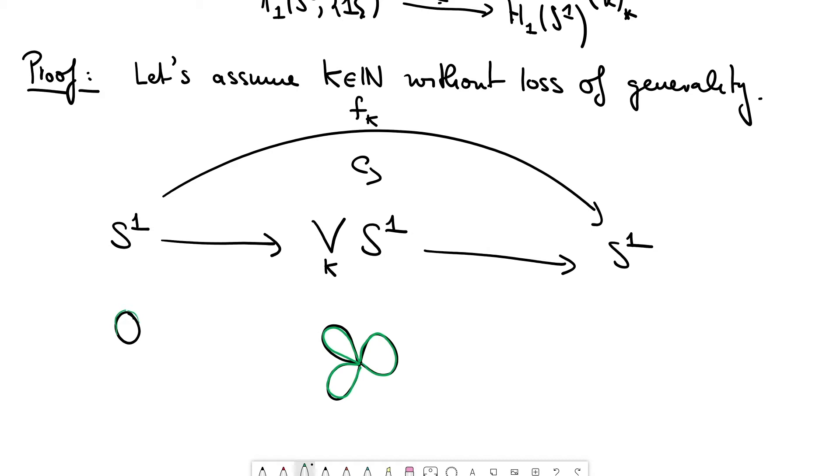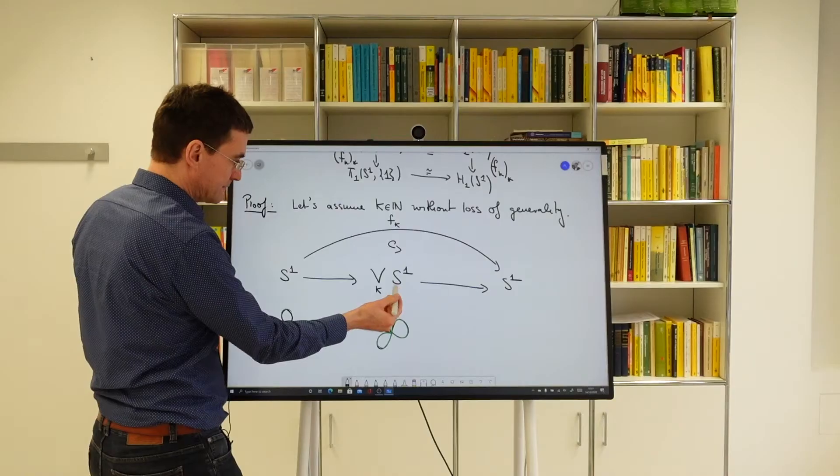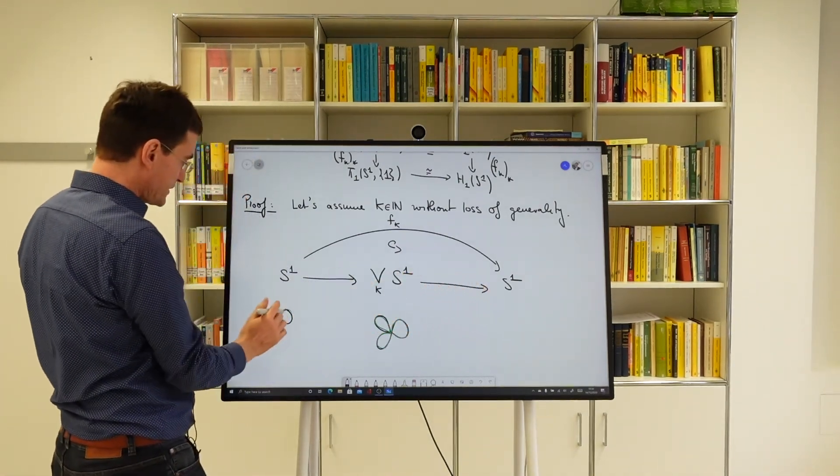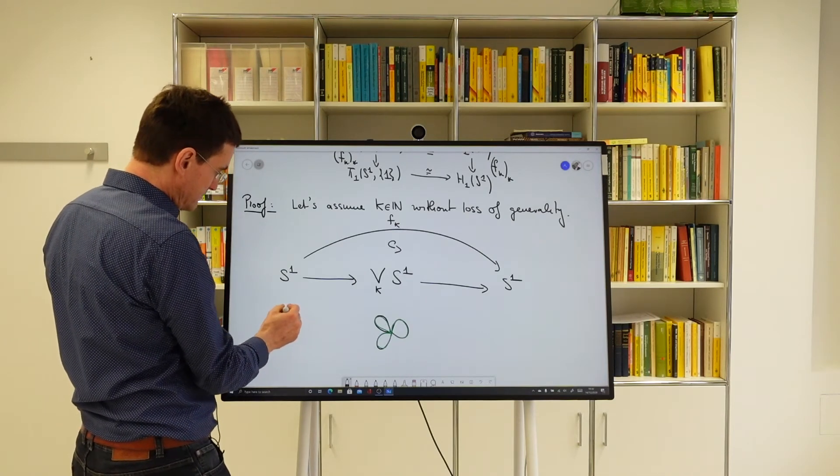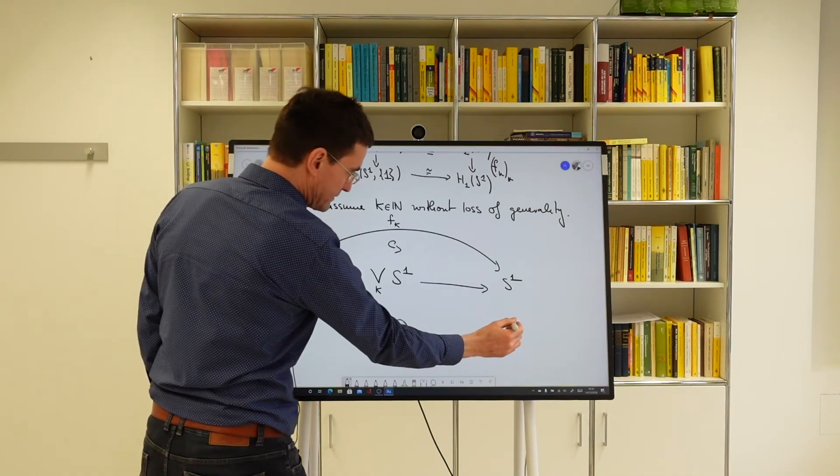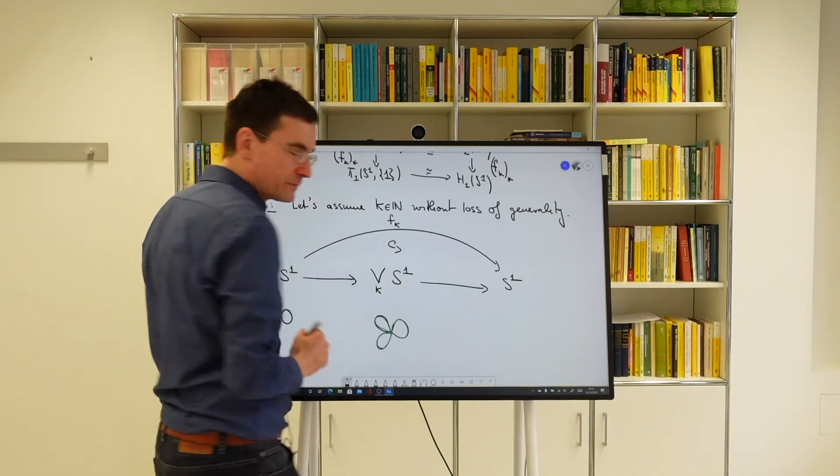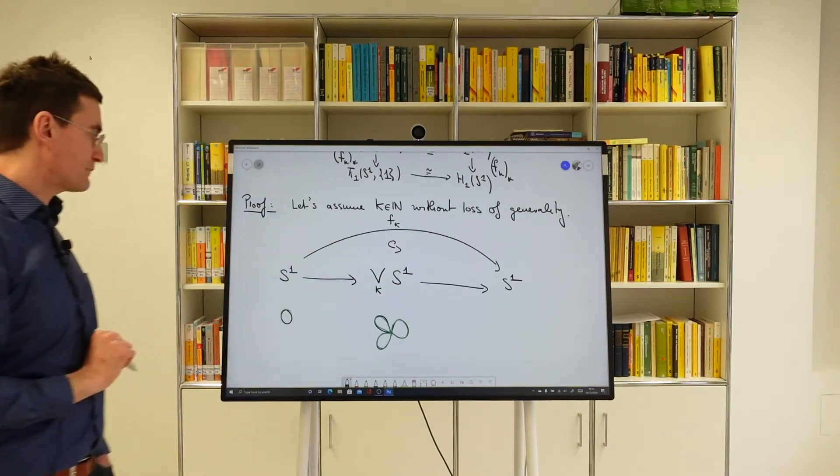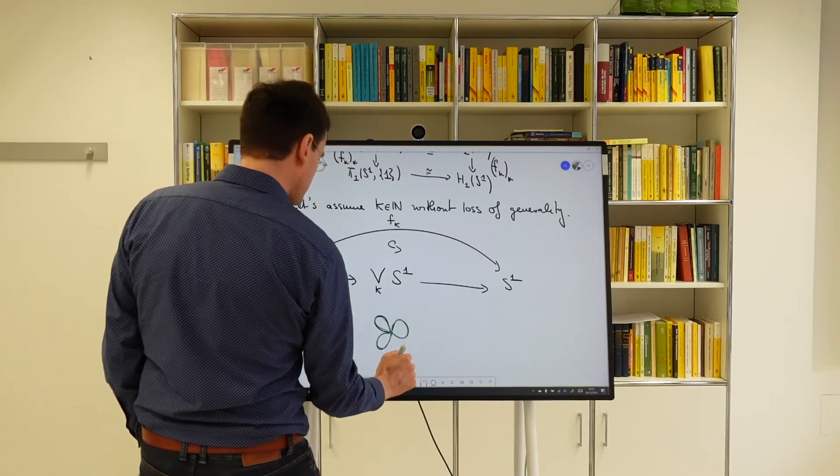Here, in particular, if you go from S^1 to this wedge, and then from this wedge of circles via the projection to one of these summands to S^1 again, this is just the identity on S^1. The map here just maps each summand to S^1 via the identity. So if you follow this composition, then you follow this circle, you go around the whole thing. Each of these circles is mapped to the circle via the identity. So the end result of the composition is really that you go around the circle k times, and this is exactly the map, f_k.